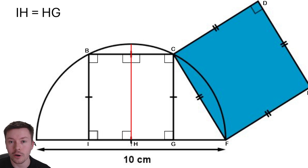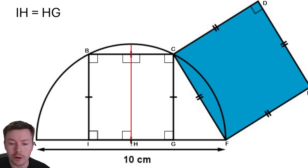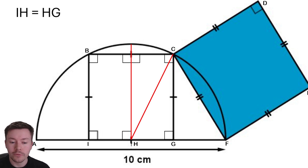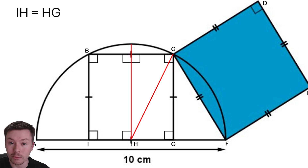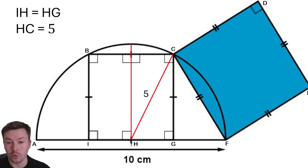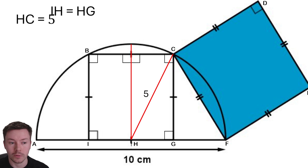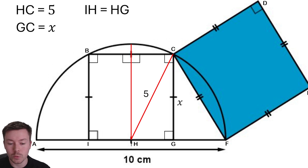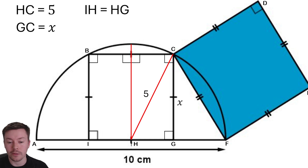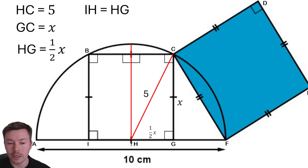What that means is that the length I to H is the same as the length H to G, and that's going to be important later on. From there, I've drawn a radius from H to C. The semicircle has a diameter of 10, so that radius from H to C must have a length of 5. I'm going to call the side length of the inside square BCGI as X.